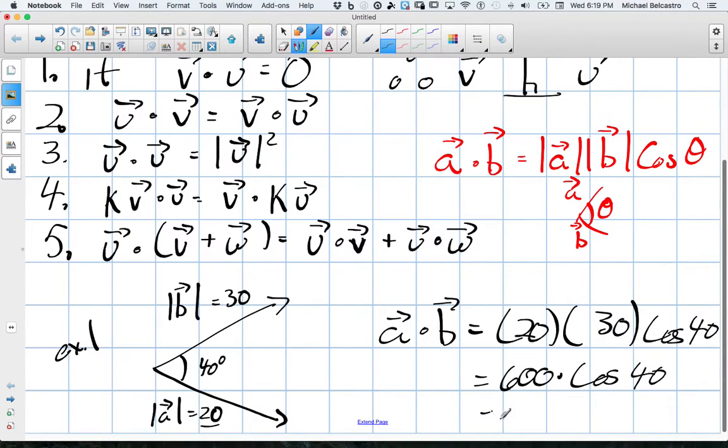So 459.6. And again, dot product kind of has to deal with, I think it is magnitude of force applied to something. So you're actually going to get, you're not going to get a vector out of this. You're going to get a value, just a specific number.